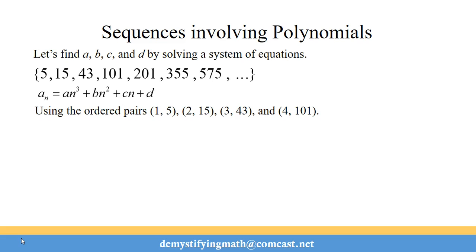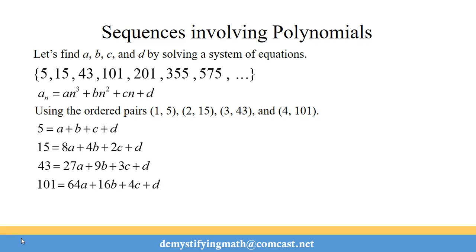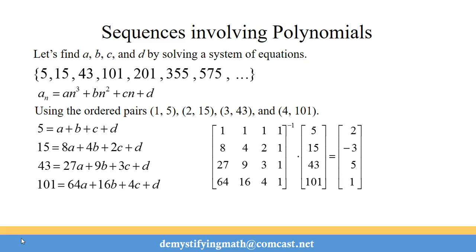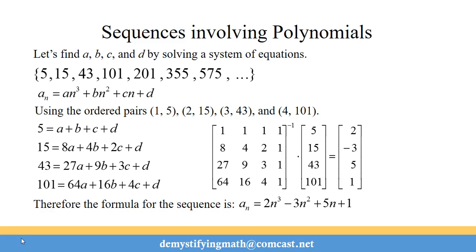Our first four terms are 5, 15, 43, and 101. We set up a system of four equations and four unknowns and plug the coefficient matrix into a matrix solver. The inverse of the coefficient matrix times the constant matrix gives us 2, negative 3, 5, and 1 — so a is 2, b is negative 3, c is 5, and d is 1, giving the formula 2n cubed minus 3n squared plus 5n plus 1. You can plug in any natural number and it fits the sequence.